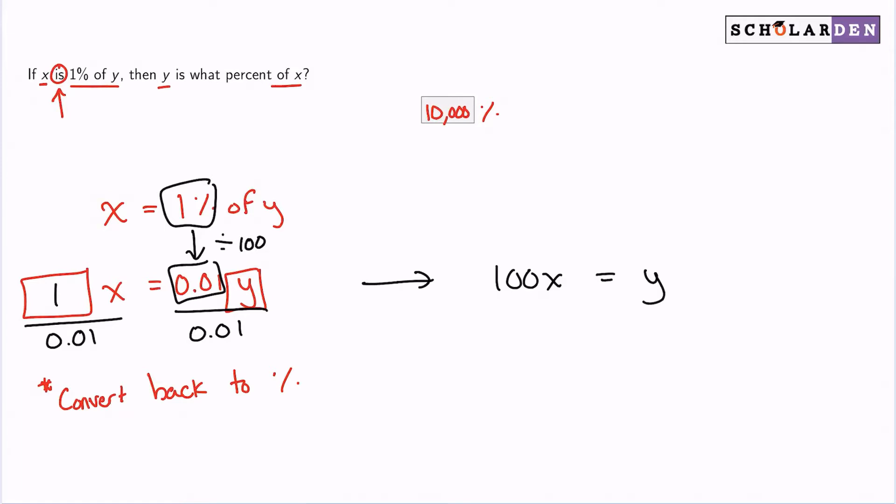So then to go backwards from a decimal to a percent, we need to multiply by 100.